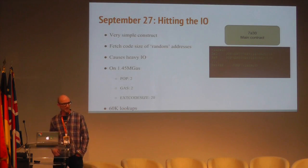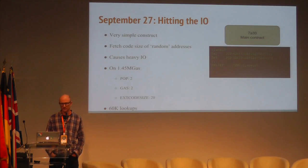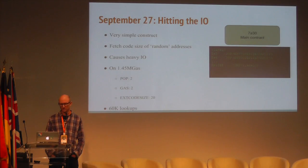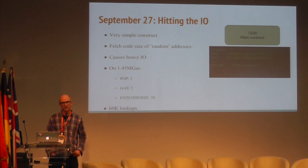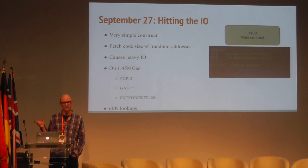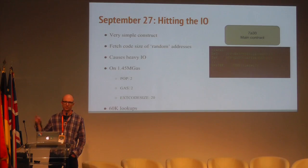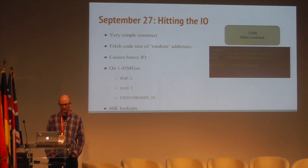The day after, we saw an attack which started hitting the IO, because these two previous attacks had been mostly focused on expanding the memory of the nodes. This was also extremely simple in construction — just a long sequence of POP, EXTCODESIZE, GAS — asking for the code size of a pseudo-random address and just ignoring the return results. So it caused the EVM to perform lookups on non-existent addresses and hit the disk a lot. On 1.45 million gas, this type of contract could do about 60,000 lookups against the disk.